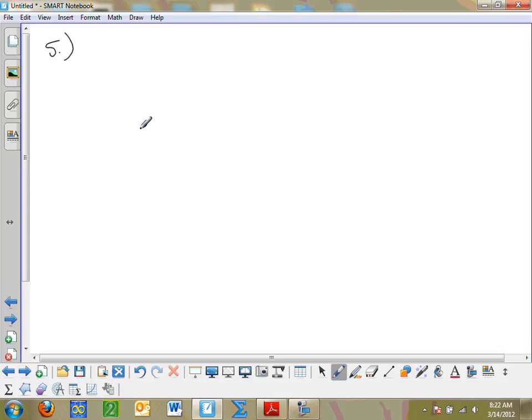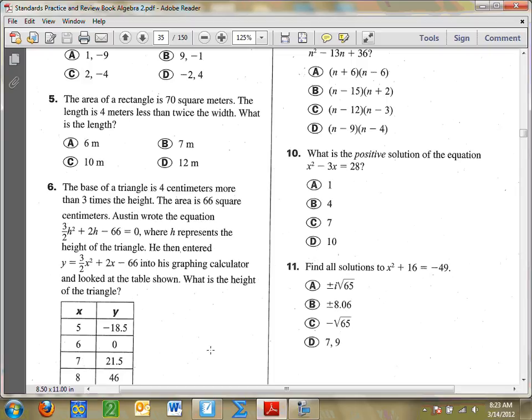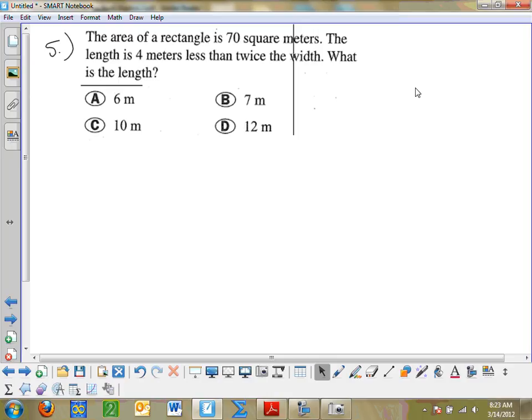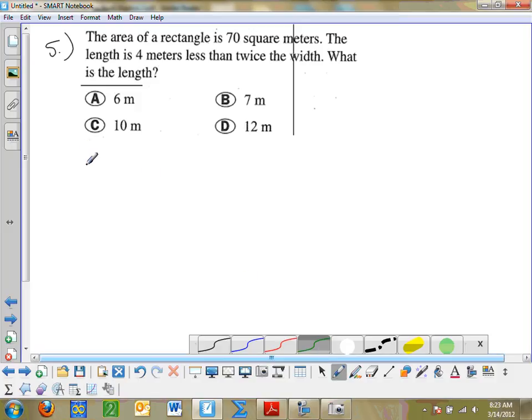Let's skip to number 5 here. Number 5 says the area of a rectangle is 70 square meters. The length is 4 meters less than twice the width. What is the length? So I have an area of a rectangle. And our area formula for a rectangle is just kind of what we went over yesterday in another problem. It was just the length times the width. And I want to fill those in step by step using this right here. So the area of a rectangle is 70 square meters. So we go ahead and fill that in for area. It would be 70.